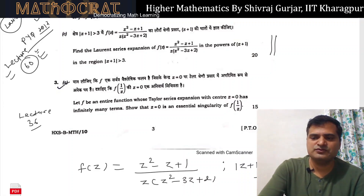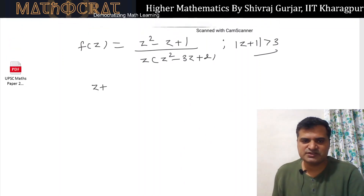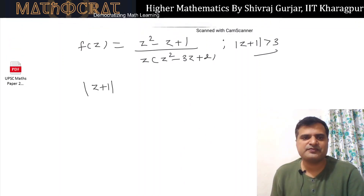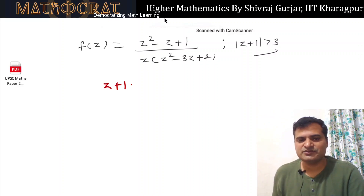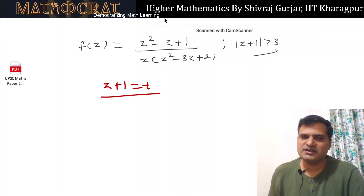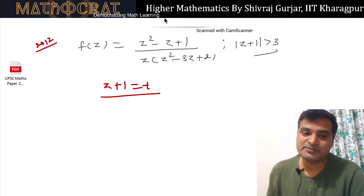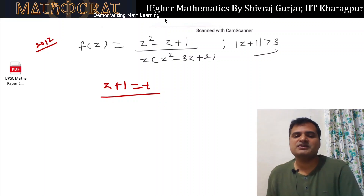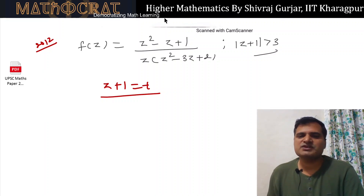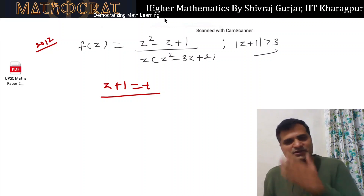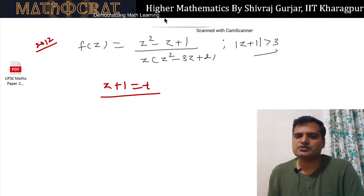What we will do is substitute t = z+1 and treat this as a new variable. So z = t - 1. The denominator z² - 3z + 2 factors as (z-1)(z-2), so in terms of t this becomes (t-2)(t-3).